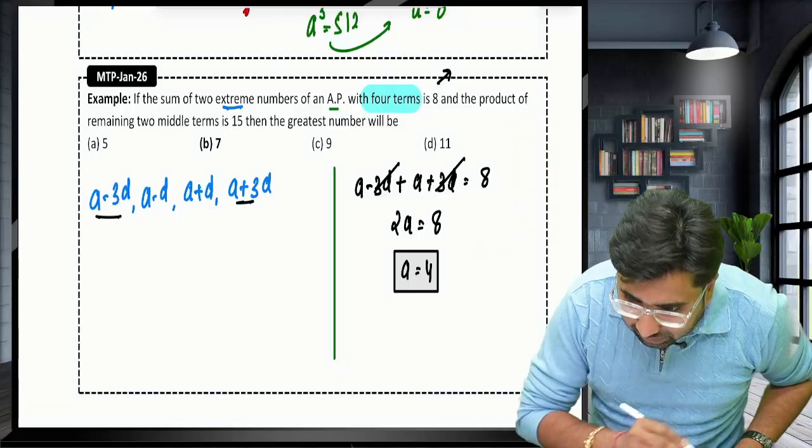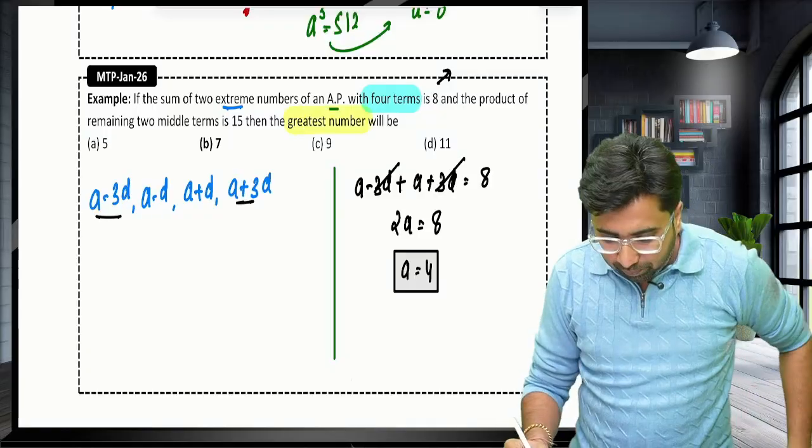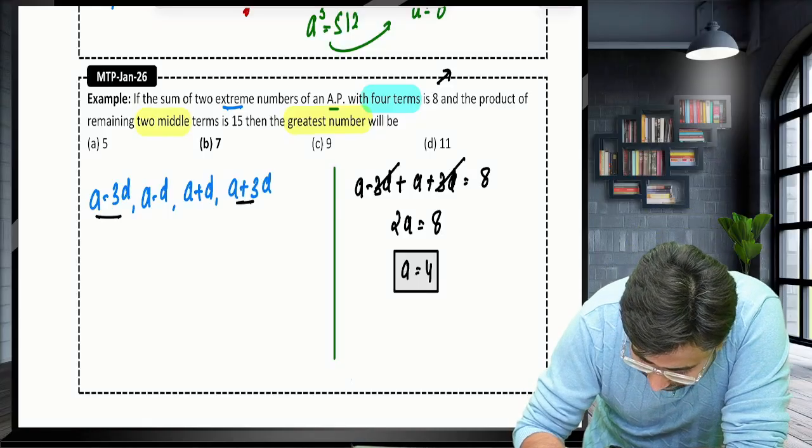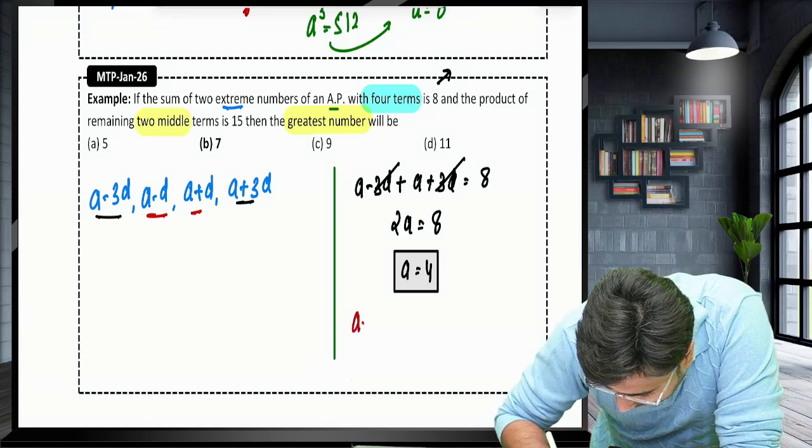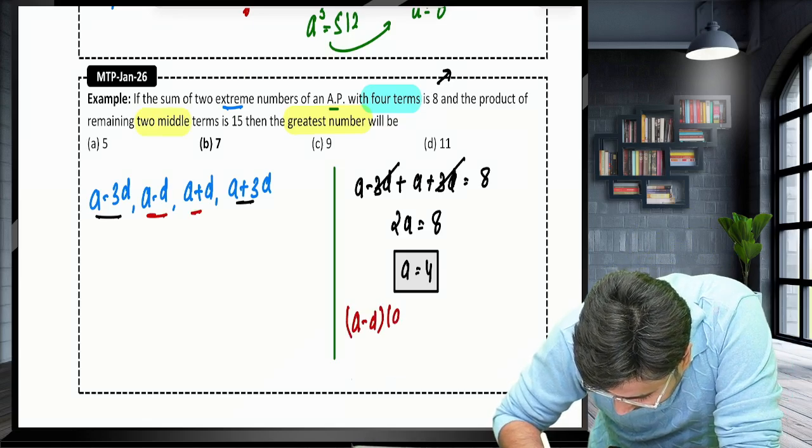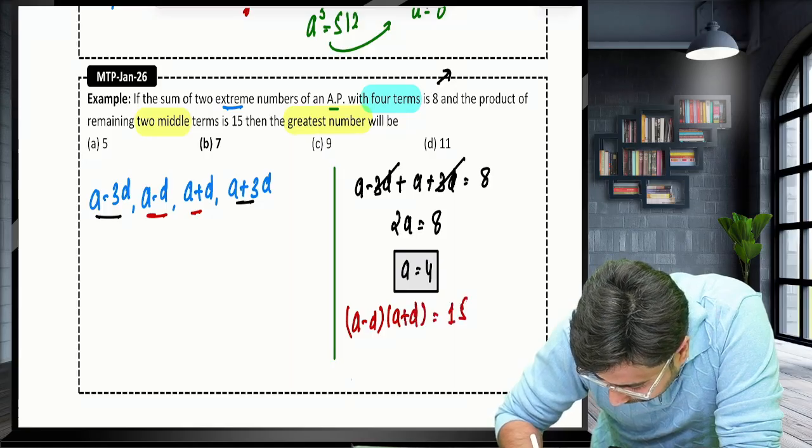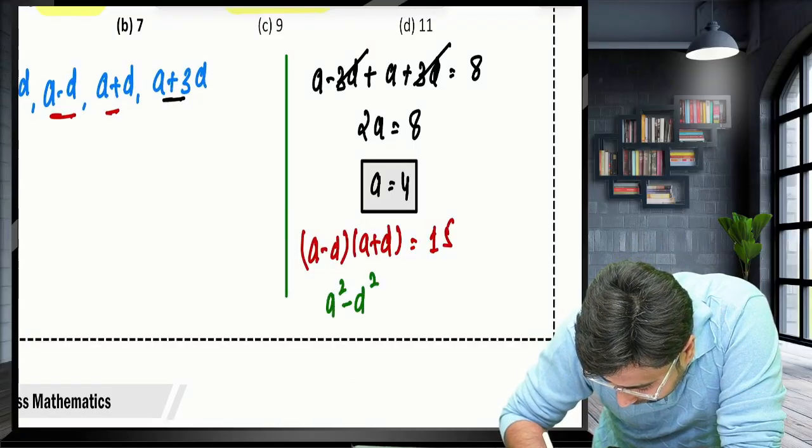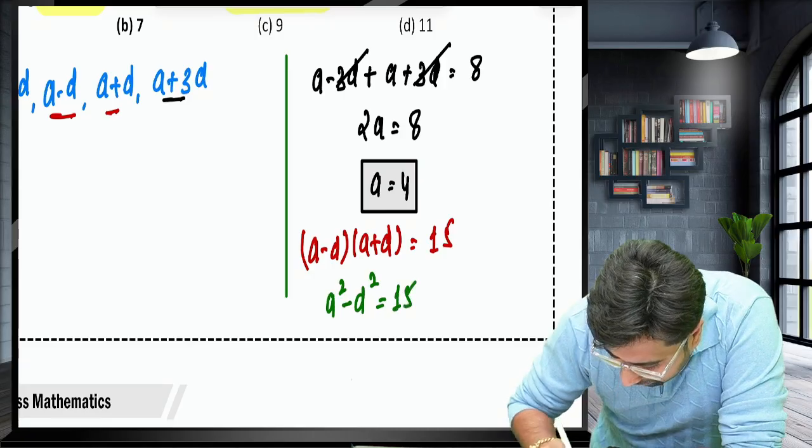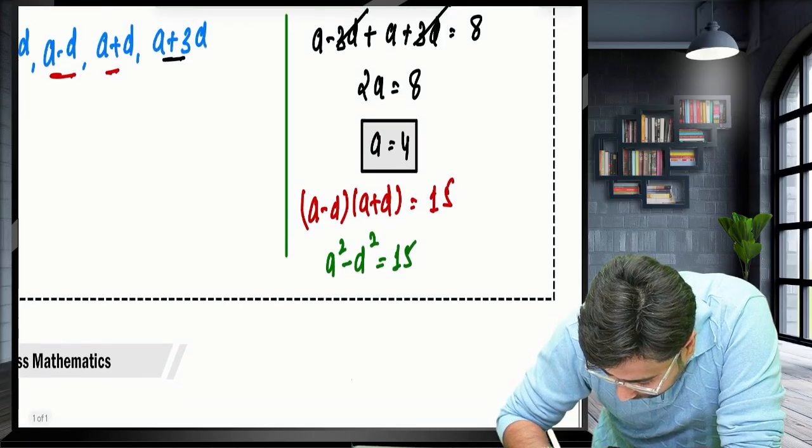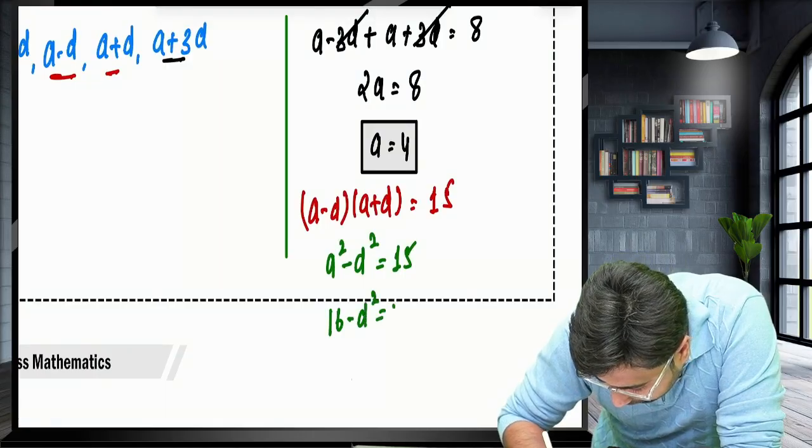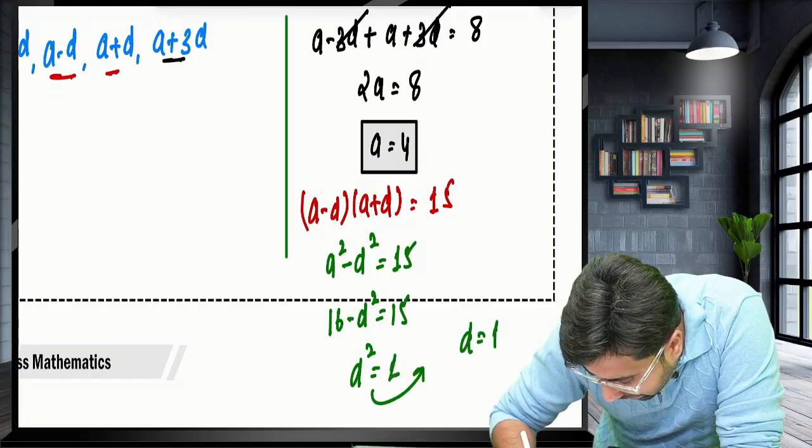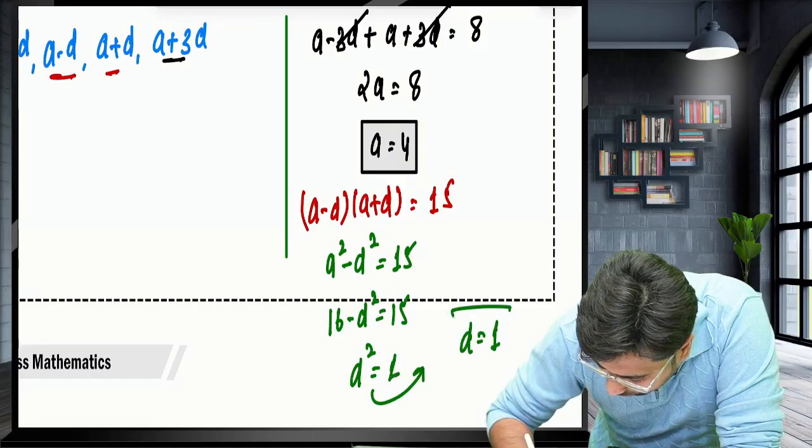But they are asking the greatest number. Now the product of the middle 2, product of the middle 2. It means A minus D, A plus D, product of the middle 2 is 15. A plus B, A minus B, A square minus D square is 15. We have A square. A is 4, so A square is 16, minus D square is 15. So you must be getting D square as 1. D will be plus minus 1. I will take only D as 1. That's because I will not form 2 series.